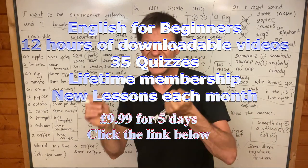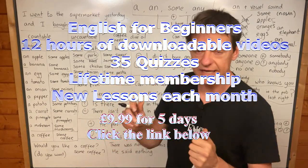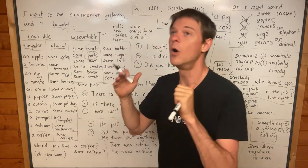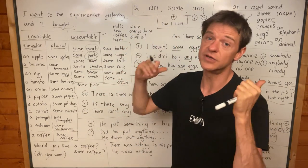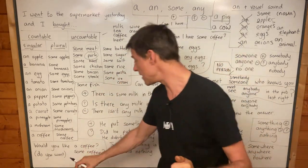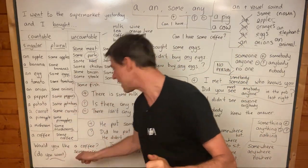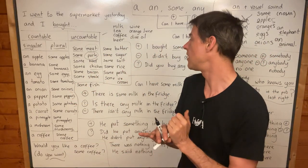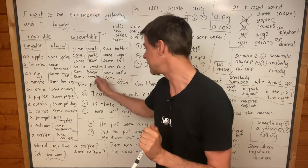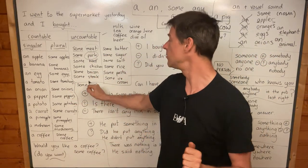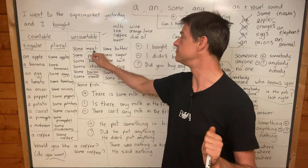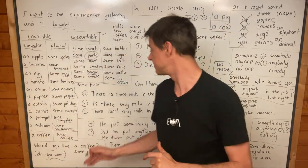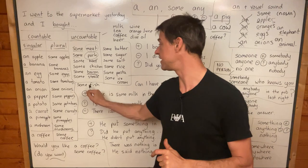But when you eat chicken, it's uncountable. I would like some chicken, please. I would like some bacon. Bacon is meat from a pig.